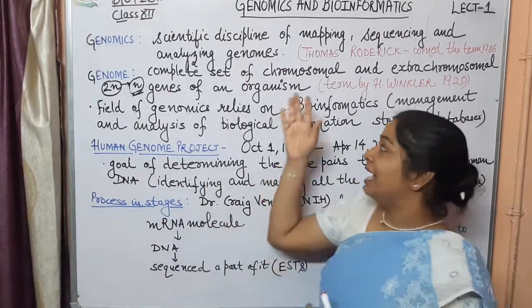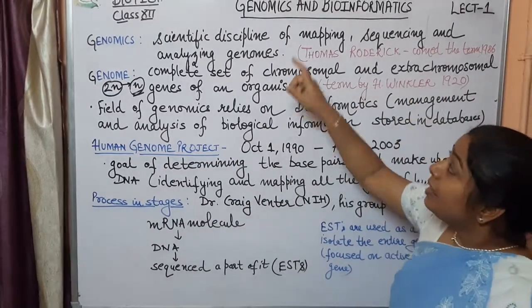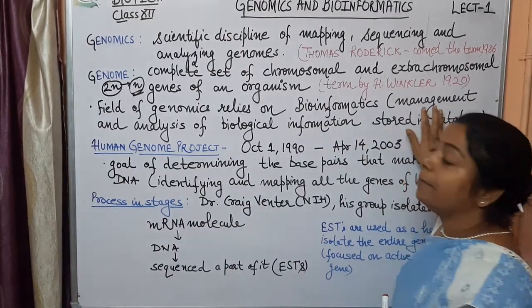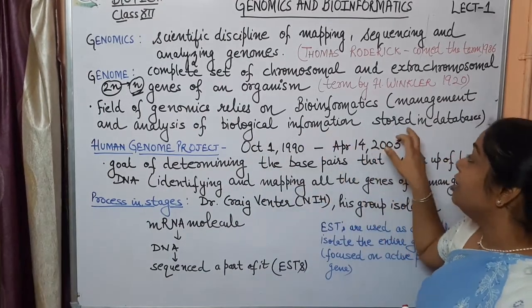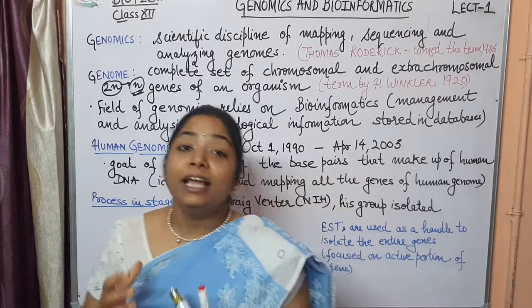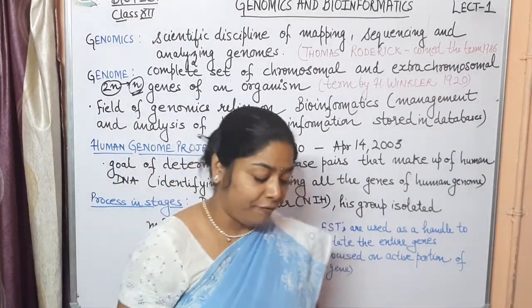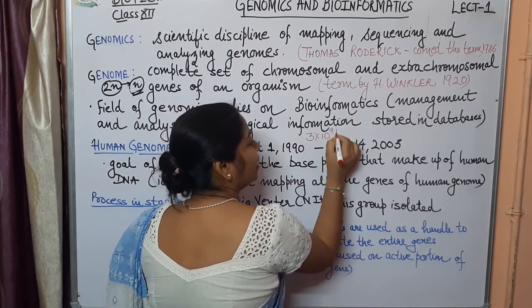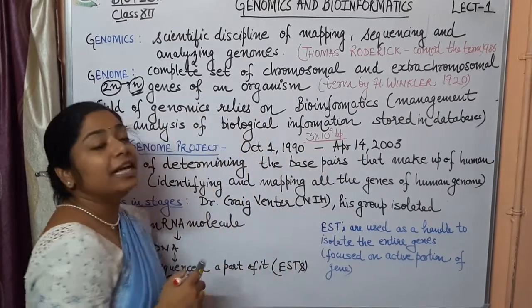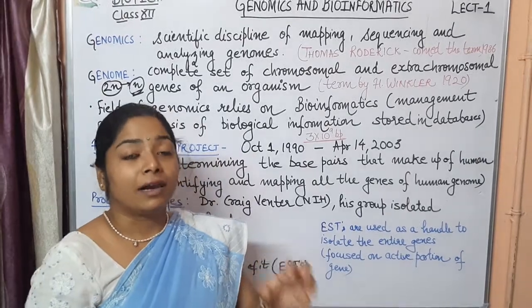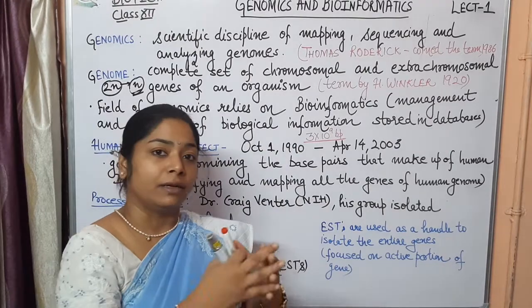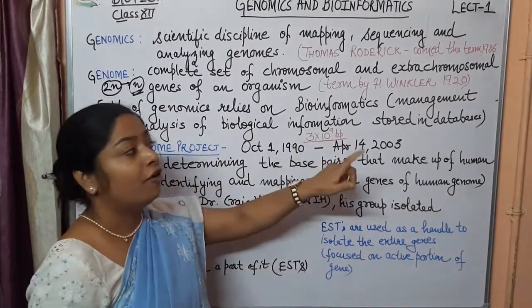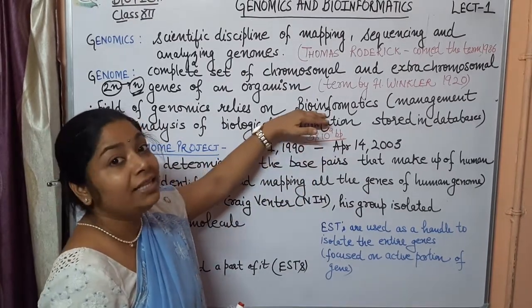The term genome was given by H. Winkler in the year 1920. This field of genomics relies on bioinformatics. Bioinformatics is the management and analysis of all biological information stored in databases. When the human genome was studied, we found that there are 3 × 10⁹ base pairs in a human genome — a quantity too large to write on paper. This information is stored in computers in the form of various databases, and the field managing this information is known as bioinformatics.